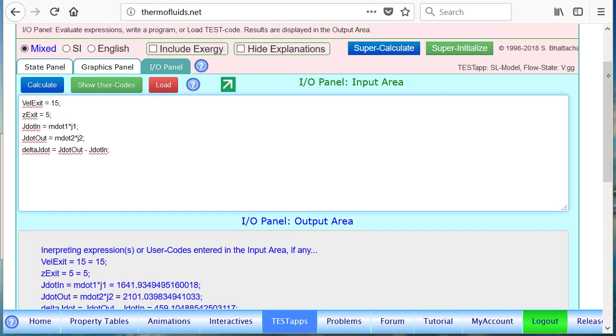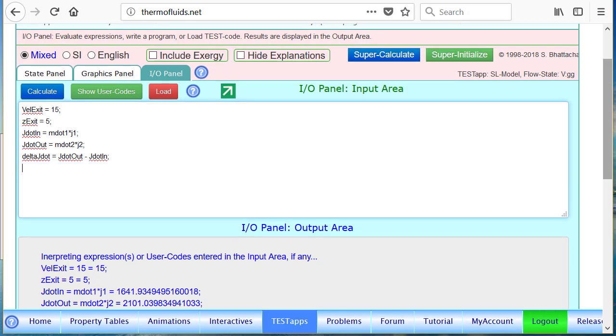But to do the parameter what-if studies, suppose somebody says, what is the effect of exit velocity? What if the kinetic energy were neglected? Remember, the inlet velocity was 10 meters per second. So, now if I change it to 10 meters per second, that is velocity at the exit is also 10 meters per second. We do a calculate.